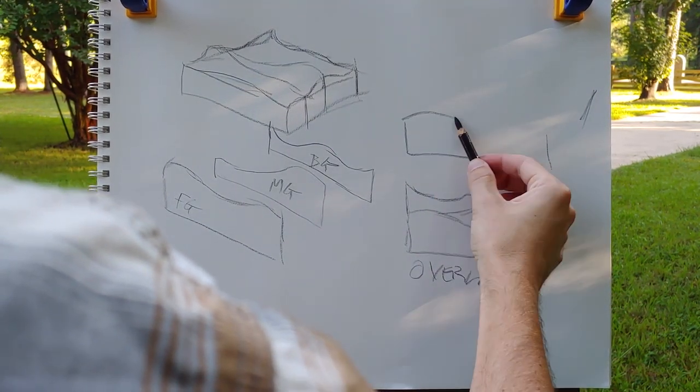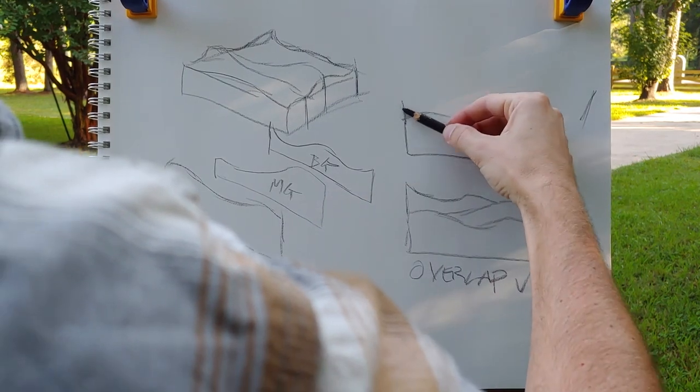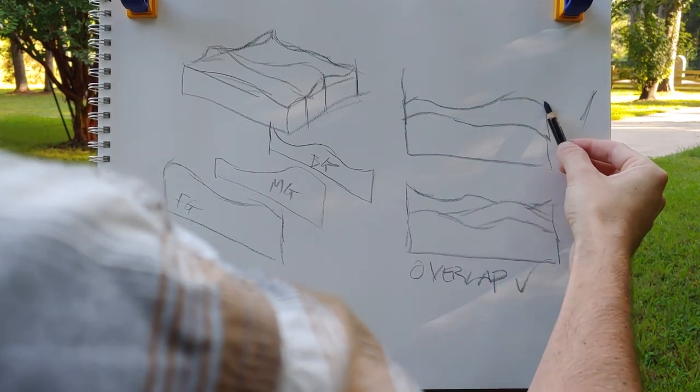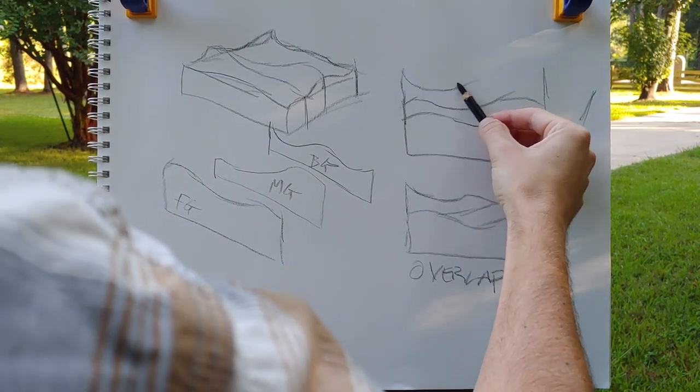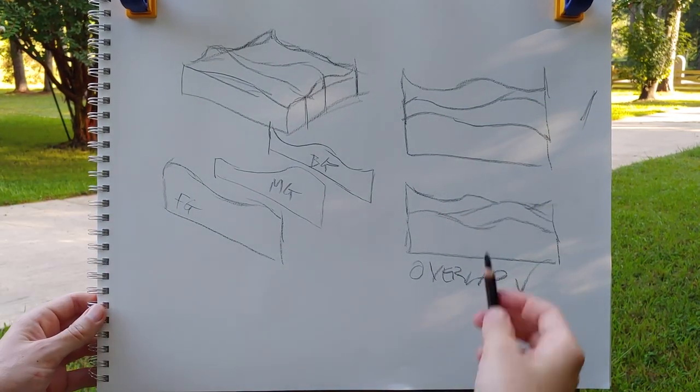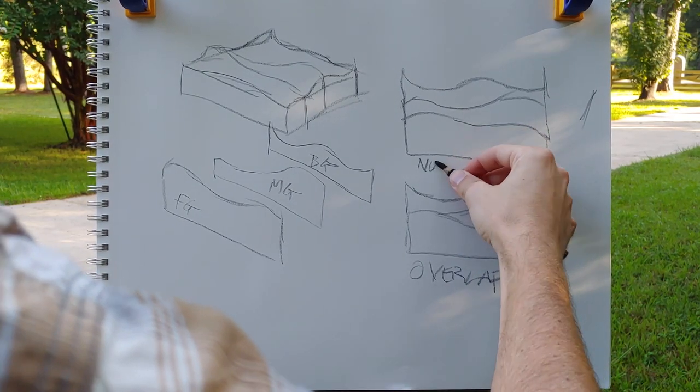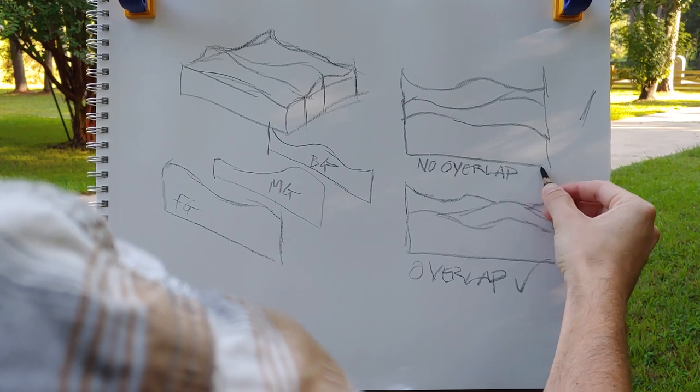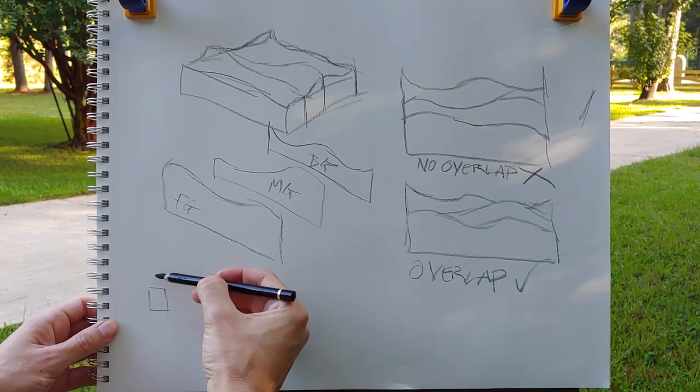However, if we take those sections and don't overlap them, and just stack them on top of each other, we get a flat landscape. This is maybe the way that you learned to do it in middle school or elementary school, or maybe that's the way you draw it naturally. But you're missing out on the most basic tool.